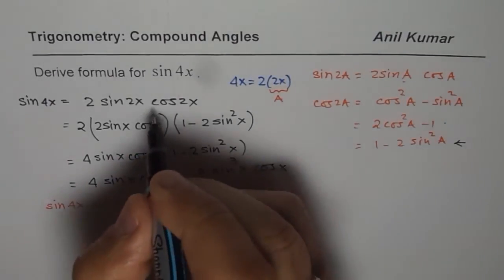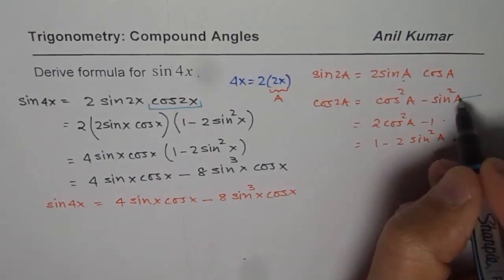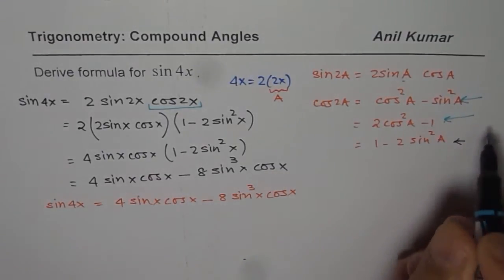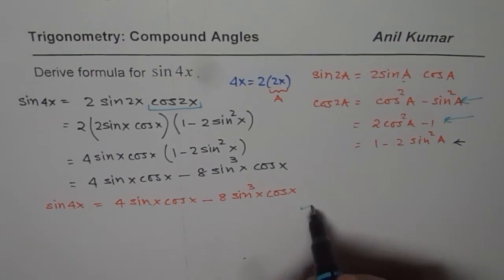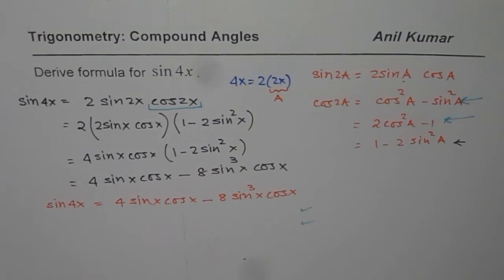But remember, cos 2x can be written in different forms. Depending on which form you use, you will get a different formula. You can derive the other two on your own. I hope that helps. Thank you and all the best.